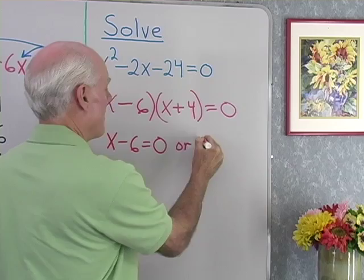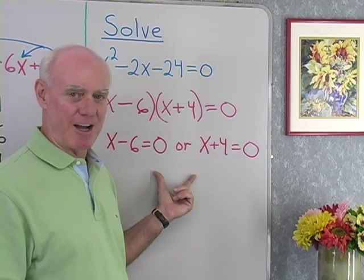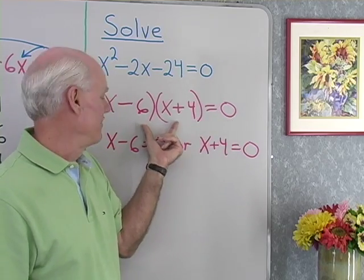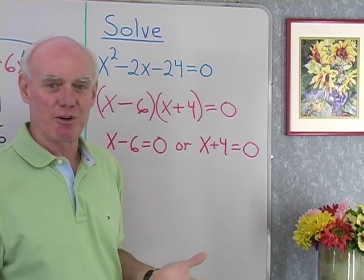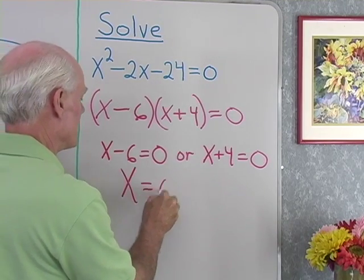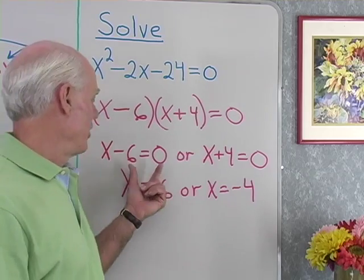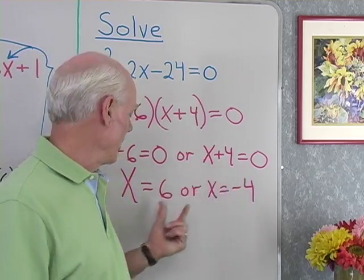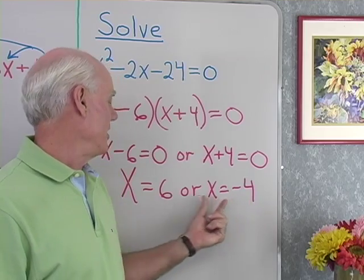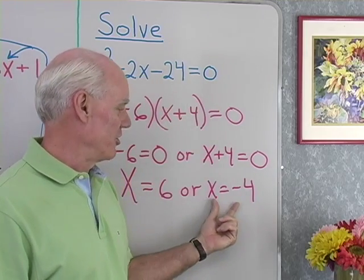So I'll set my factors equal to zero: x minus 6 equals 0, or x plus 4 equals 0. That's the zero factor property — I need zero on the right side and multiplication on the left side. This reduces to two linear equations in one variable, very easy to solve: x equals 6 or x equals negative 4. I can substitute either solution back into the original equation and get a true statement. These are the two solutions.